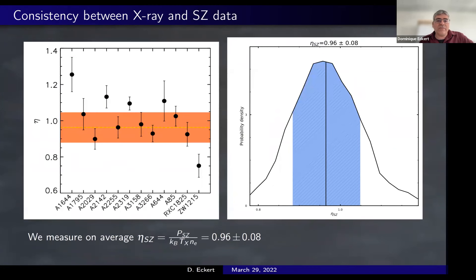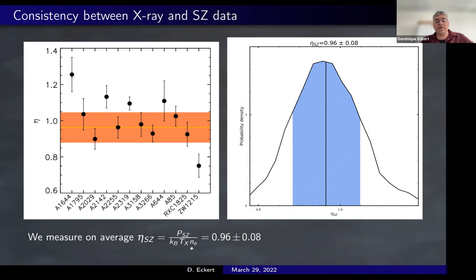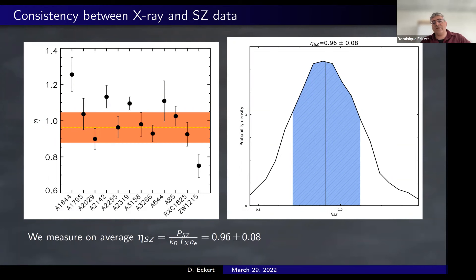Before combining the datasets, we must ensure they are statistically consistent since they are completely independent. This is shown by the quantity eta_SZ — the ratio of the average pressure measured by the SZ experiment from Planck to the corresponding quantity from X-ray spectroscopy temperatures. The two measurements are in very good agreement with an average ratio of 0.96 ± 0.08, confirming we are probing the same quantities and can combine them effectively.